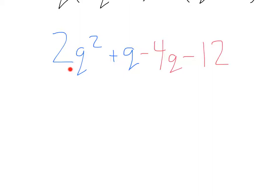This 2q squared, there's no other q squareds here, so we can leave that just as it is. Here we have q minus 4q. We can combine those. 1q minus 4q will be negative 3q. Lastly, we have this negative 12. Nothing to combine that with, so we'll just write negative 12.